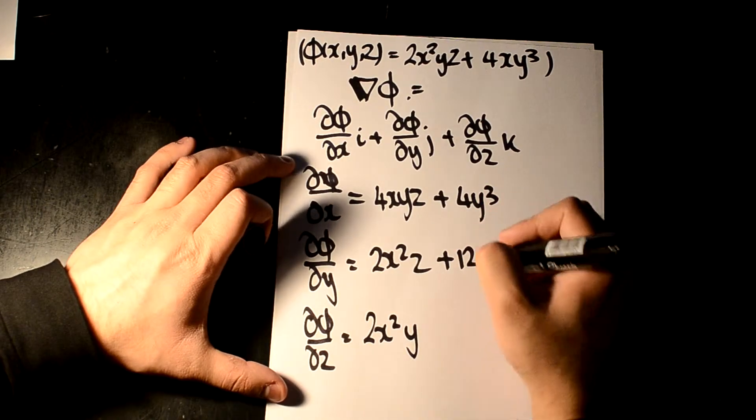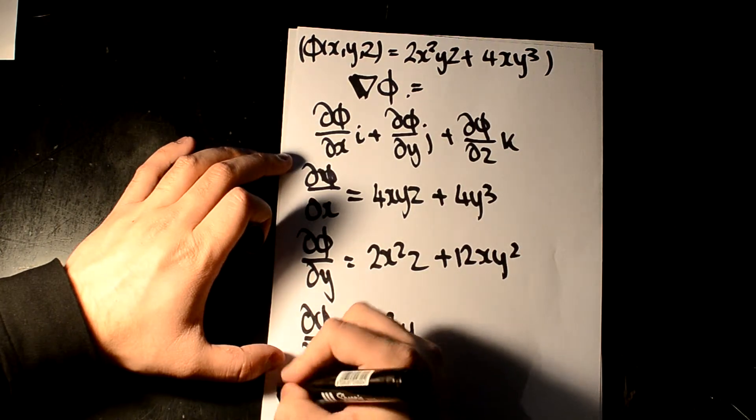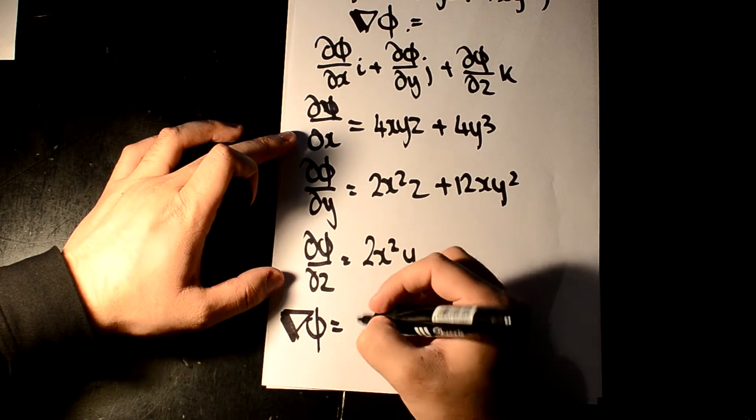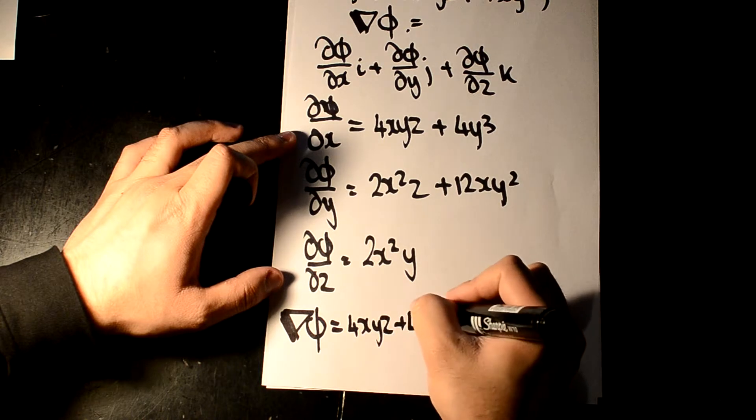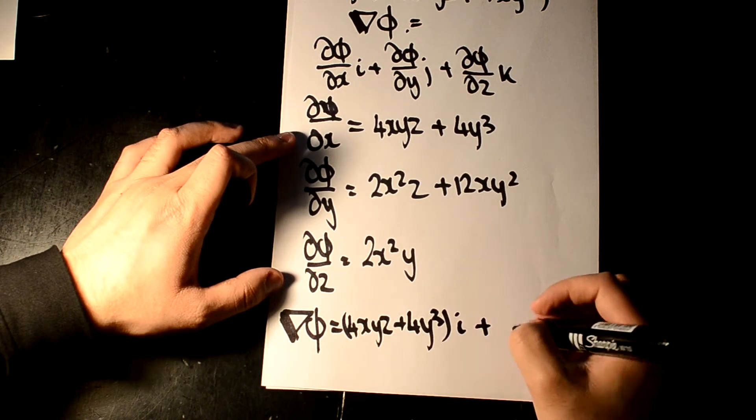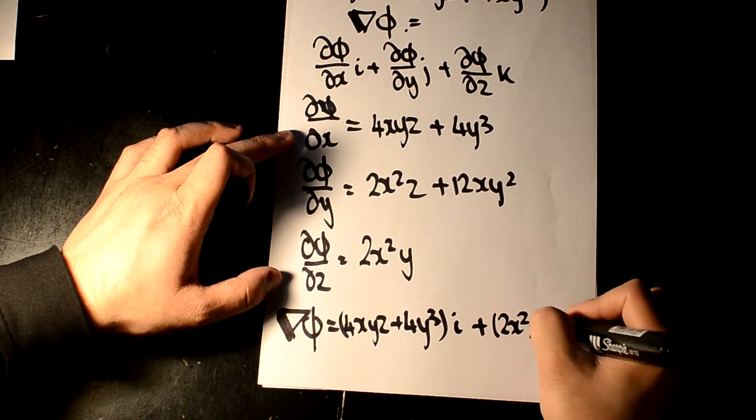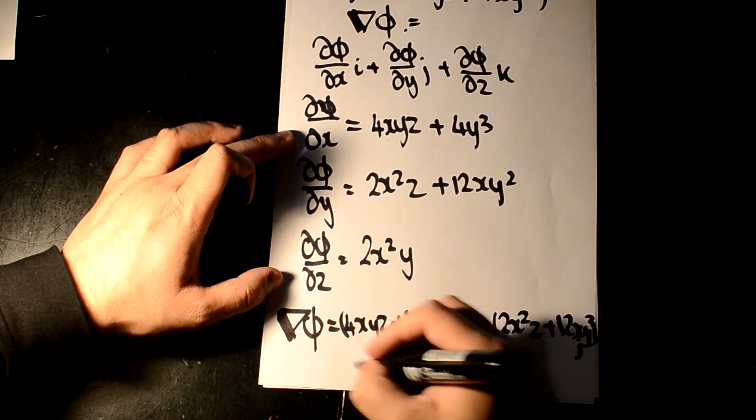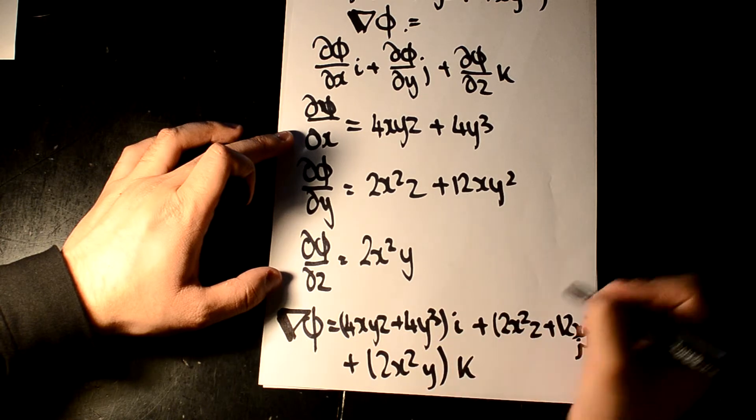Now let's get each of these points and put them into here. So nabla phi is going to be 4xyz plus 4y cubed i plus 2x squared z plus 12xy squared j plus 2x squared yk.